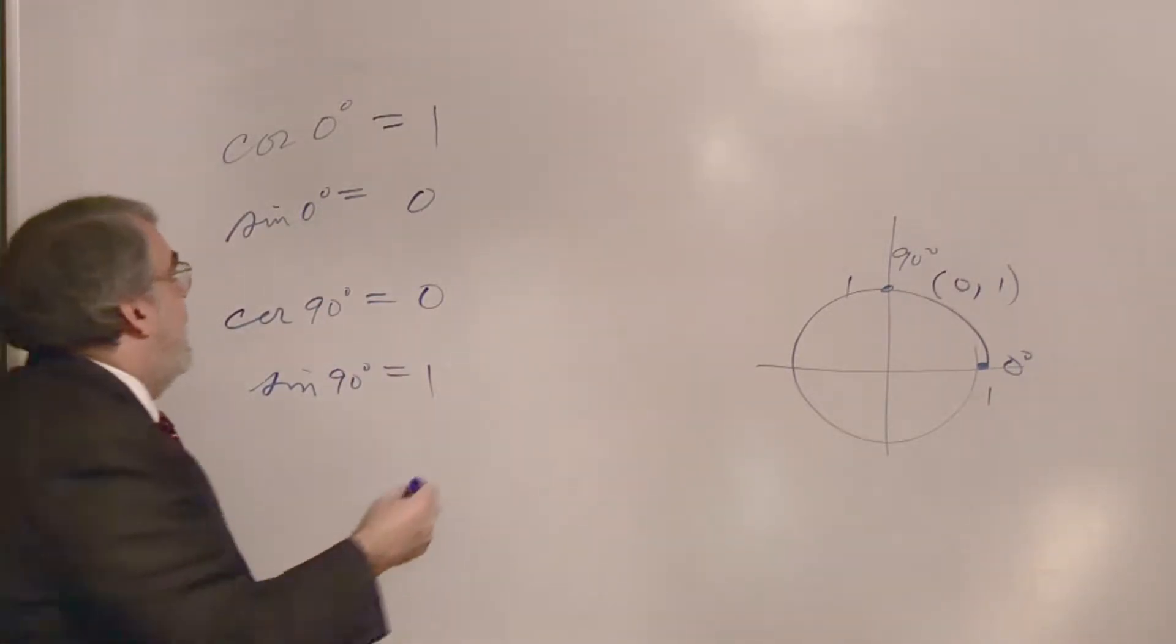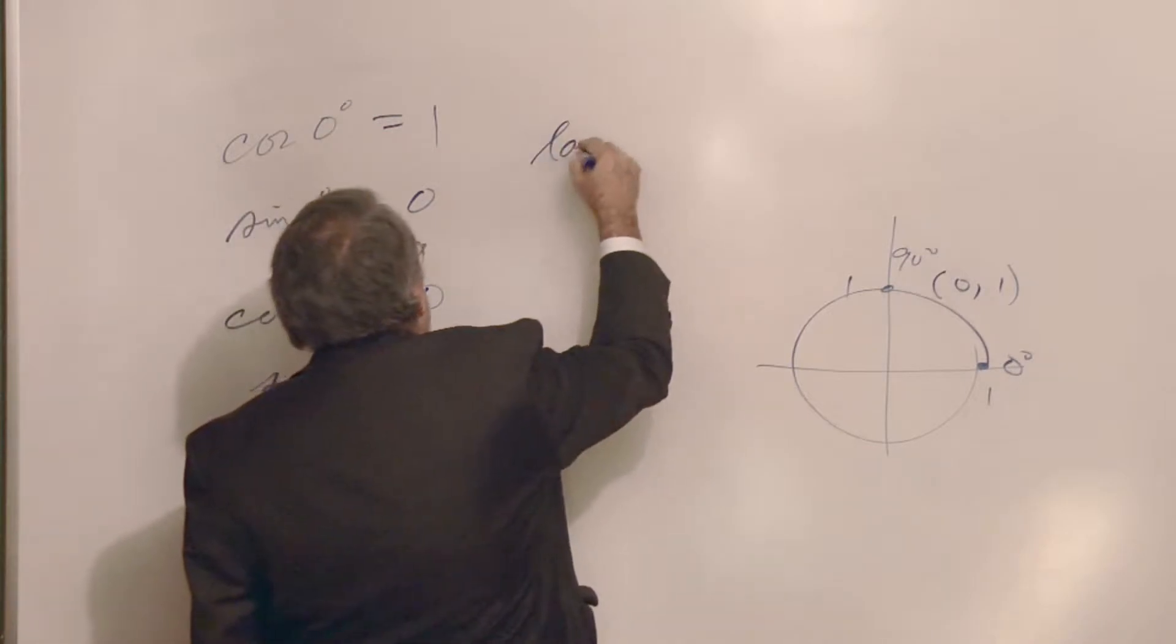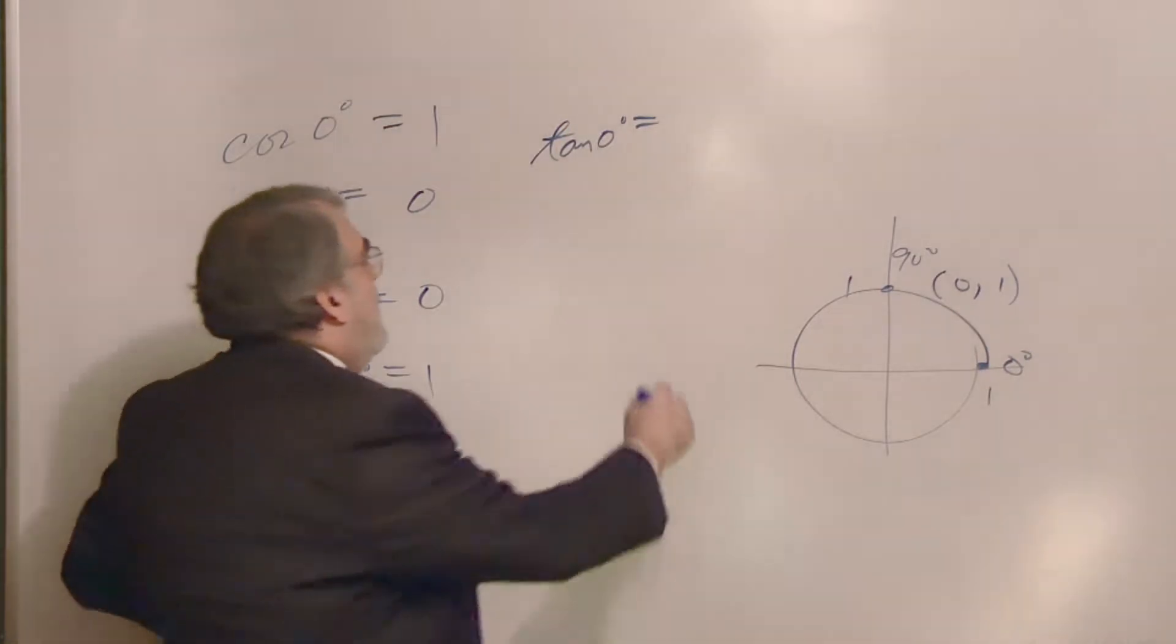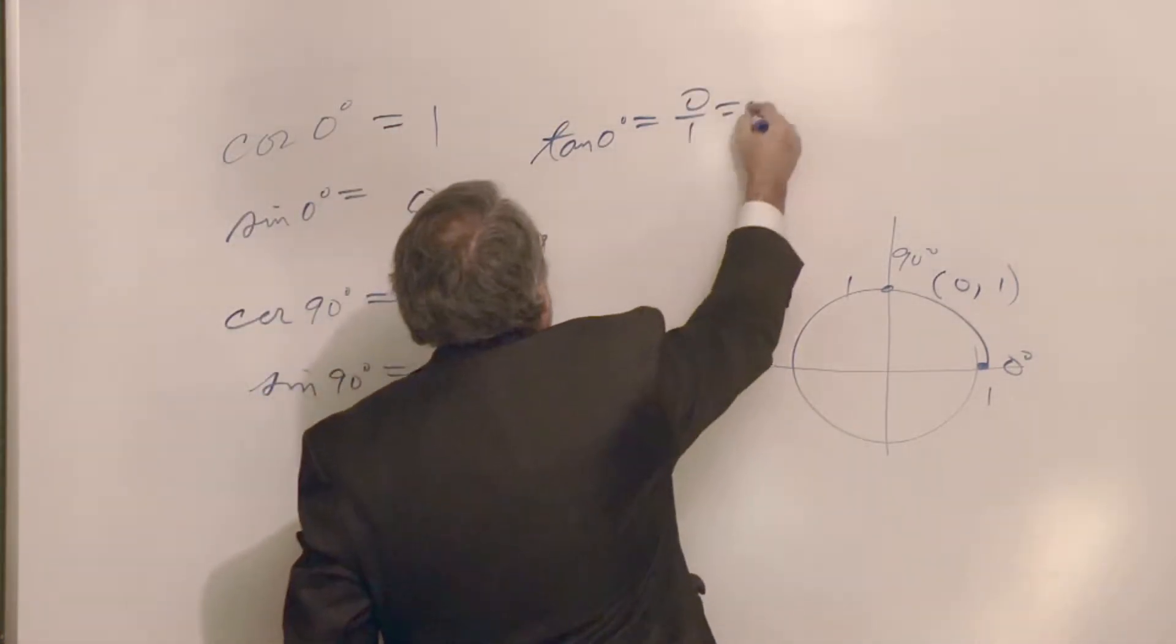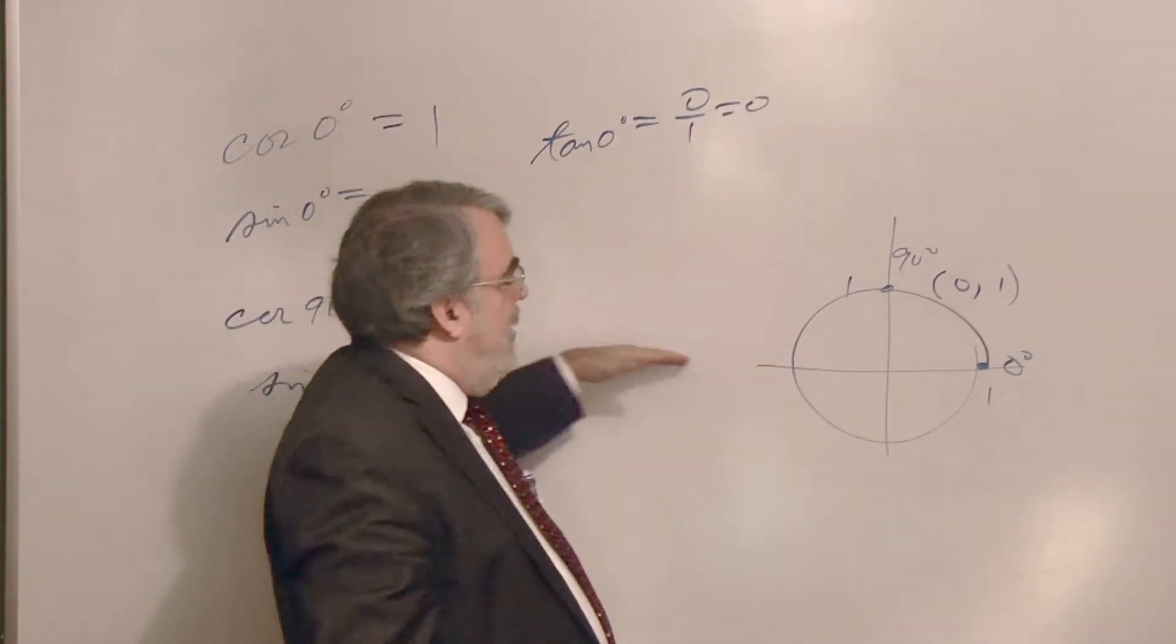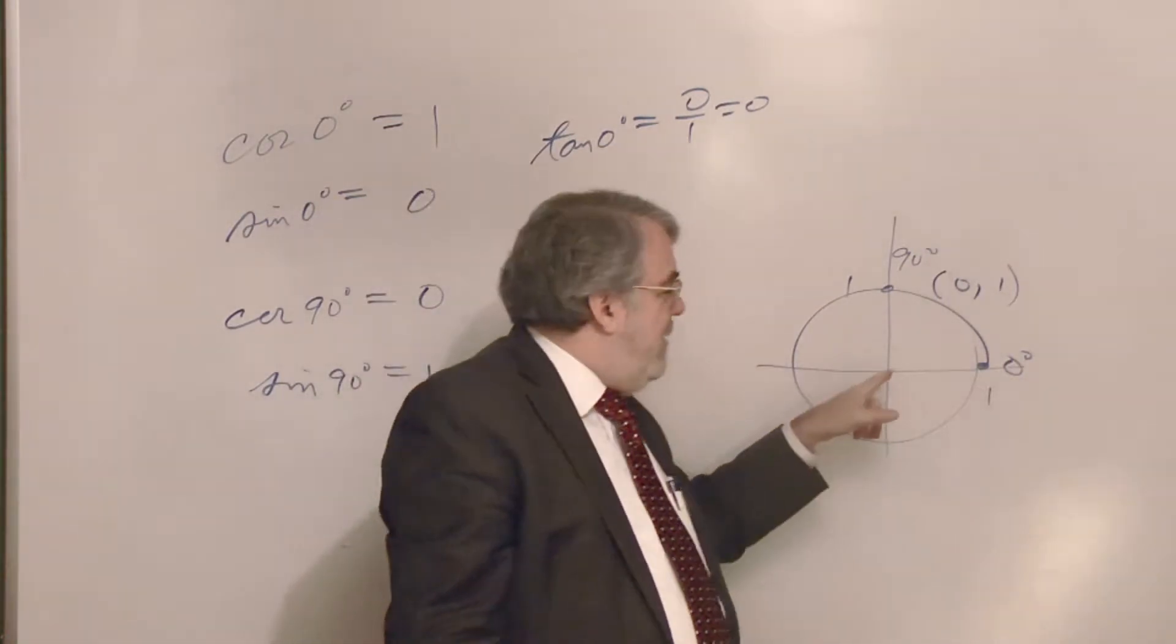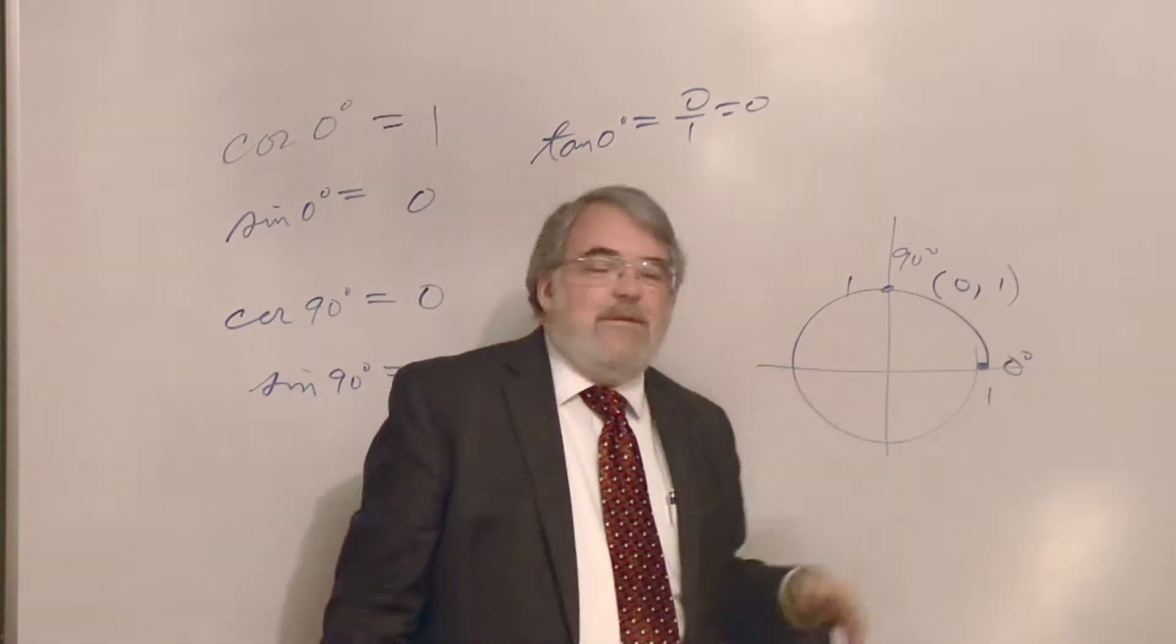Alright. So, that's kind of interesting now, because let's look at this. What about the tangent of zero degrees? Well, sine divided by cosine, zero divided by one, is zero. And that matches the slope idea, because the line connecting the origin to this point is horizontal. The slope is zero.